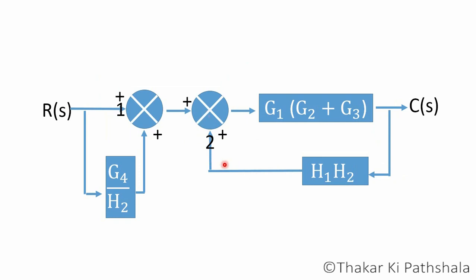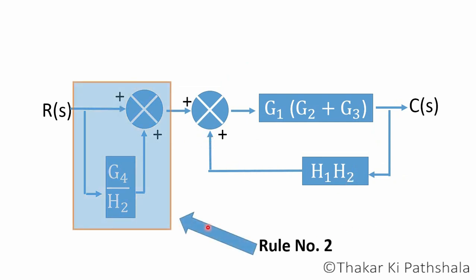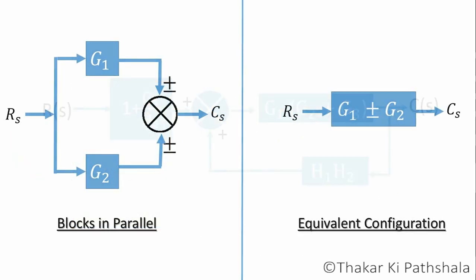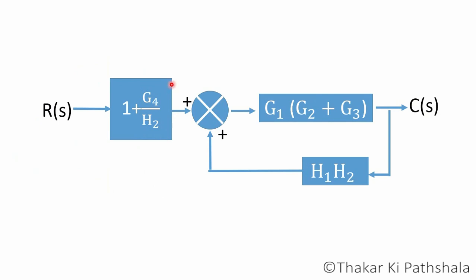Rule number two is for blocks in parallel. We are assuming that the gain of this path is one. So as per rule number two, we have eliminated that block by adding the both blocks. Now we will eliminate this feedback loop for which we will apply rule number three.